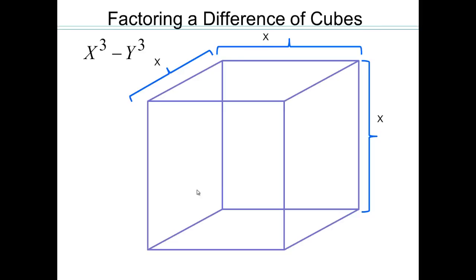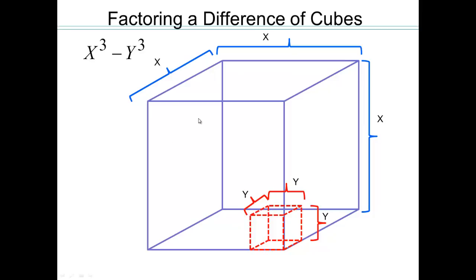Now let's take a look at a different kind of binomial: difference of cubes. So x cubed minus y cubed — that's what we want to look at next. How can we visualize that? A cube? Oh yes, you can visualize a cube. Here's an x by x by x cube. What does it mean to minus a y cubed? That means take a y cubed, take another smaller cube out of this cube. Let's visualize how we can put this back together.